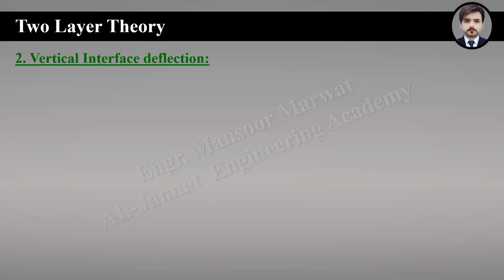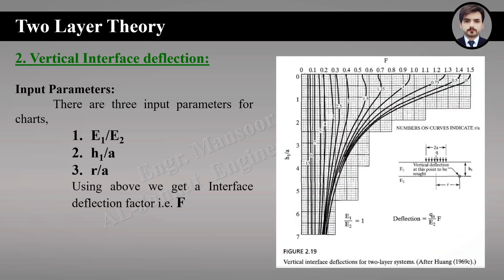Vertical interface deflection is also an important criterion of pavement design. It is expressed in terms of a deflection factor F, with reference figure 2.19, having three input parameters: modulus ratio E1/E2, thickness-to-radius ratio h1/a, and radial distance-to-radius ratio r/a. The formula is: vertical interface deflection = qa/E2 × F. There are separate figures for different modulus ratios. The figure for modulus ratio equal to 1 is also called the Boussinesq solution, since both layers have the same material properties.